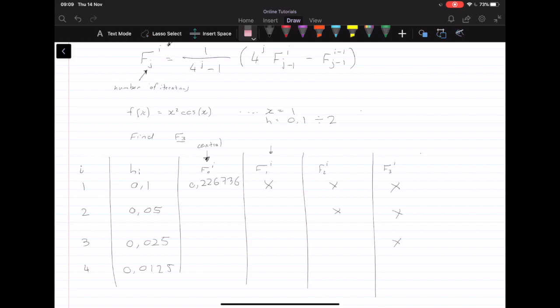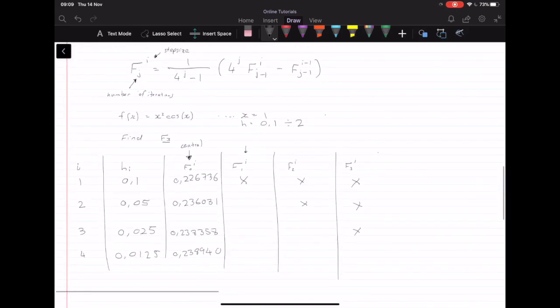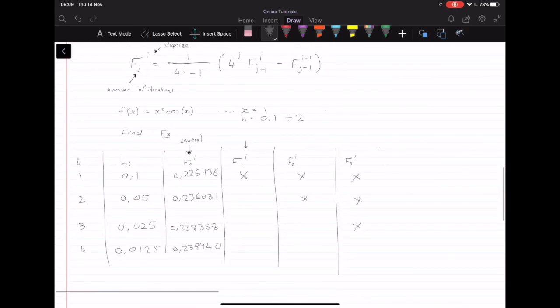For the next value, we get 0.236031. Plugging in h equals 0.025 and x equals 1, we get 0.238358. And finally, we get 0.238940. So so far, nothing really new. All we've done is use the central difference method to calculate these four values.